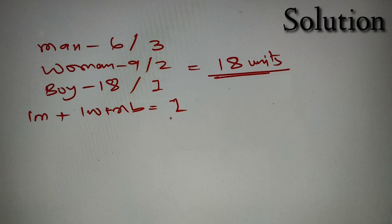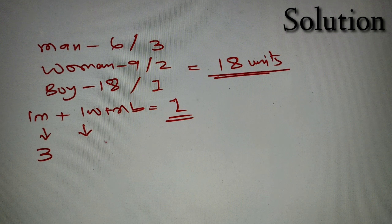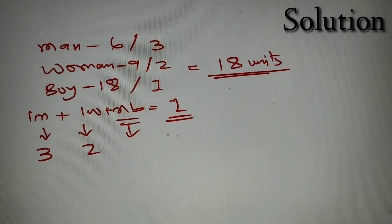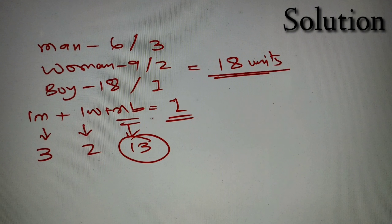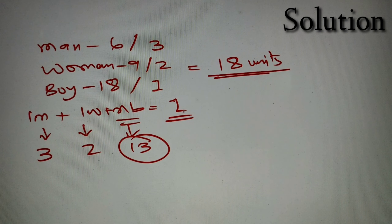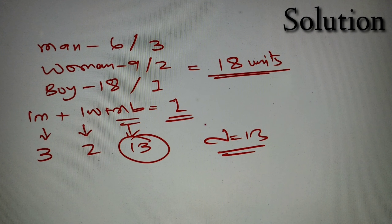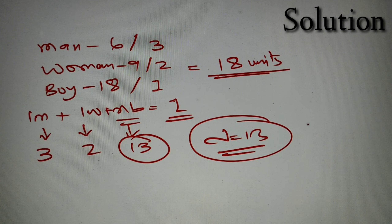Since we have to find for one day only: the man does 3 units of work, the woman does 2 units of work, and the remaining 18 minus 5 units of work will be allotted to 13 different boys. So we require 13 different boys to complete the work together with one man and one woman in a single day. Our answer is Option D, 13. You can see how easily you can solve this using the units method.